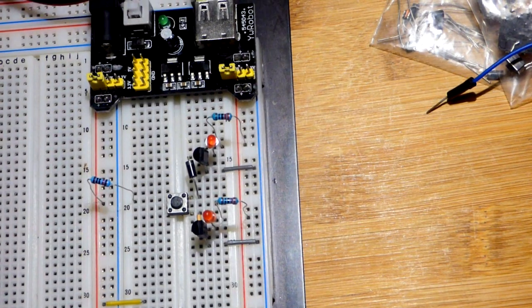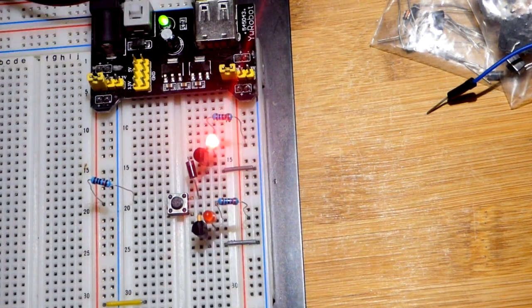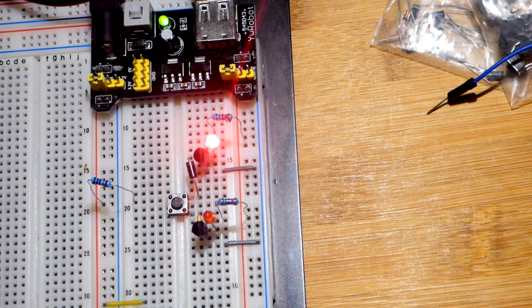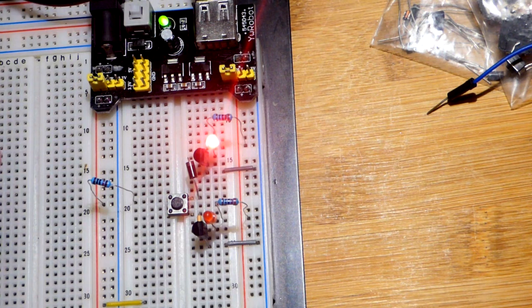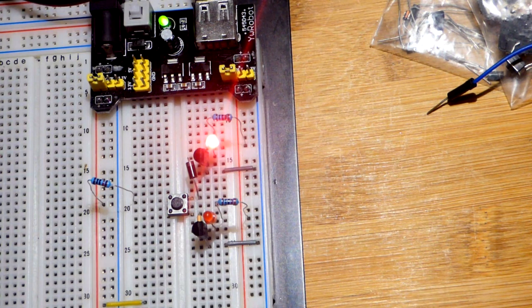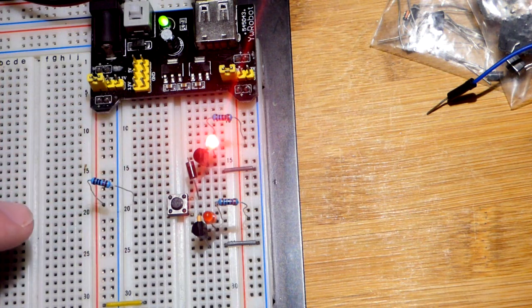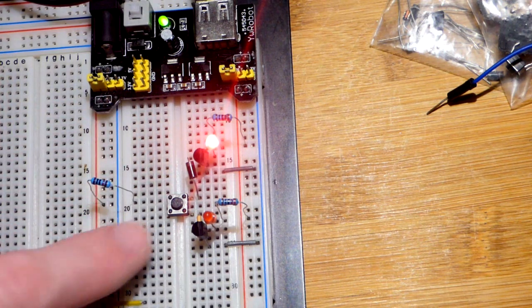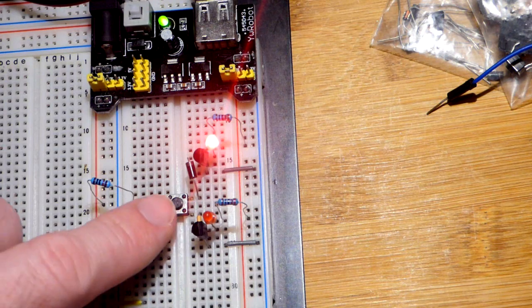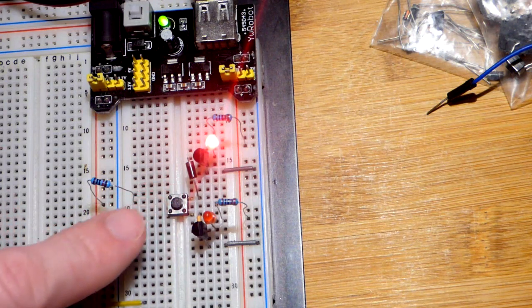So now in this video we're going to look at a circuit that I've actually wanted to make for a long time. Maybe I did make this before and forgot about it. But in any case, we have that LED on. When I'm not pressing the switch, this is a normally open switch. So right now the switch is off.